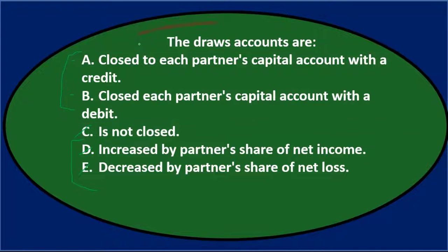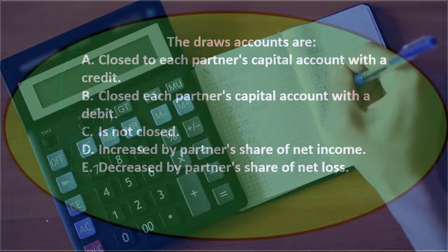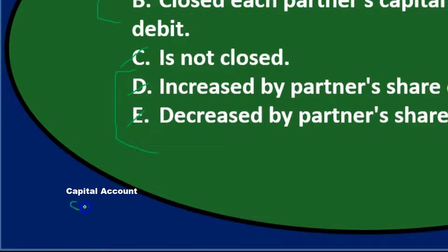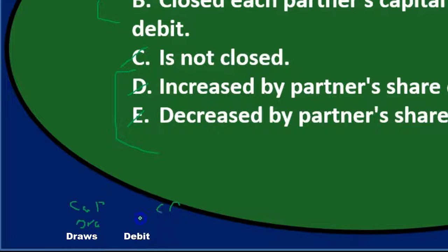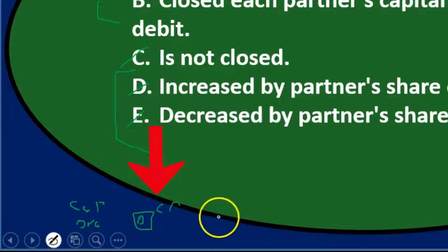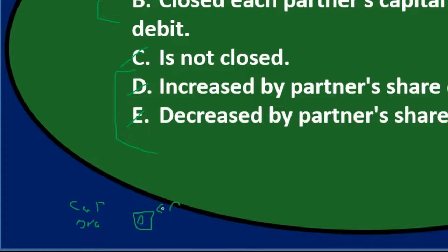The draws accounts are either A) closed to each partner's capital account with a credit, or B) closed with a debit. To figure this out, think about normal balances: the capital account has a credit balance, and the draws account — which brings down total capital — has a debit normal balance. To bring draws down to zero, we do the opposite and credit the draws account, then debit the capital account. This brings draws to zero and reduces the capital account.